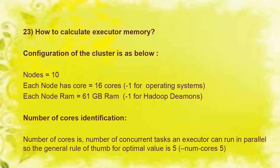Next is how to calculate executor memory — this is most important and almost all interviews will ask this question. The cluster configuration is: 10 nodes, each node has 16 cores (minus 1 for the operating system), and each node has 61 GB RAM. We give 1 GB for Hadoop daemons, so we allocate 1 core for the OS and 1 GB for Hadoop daemons in each node.